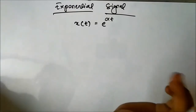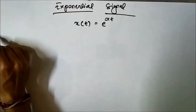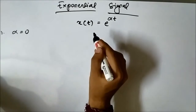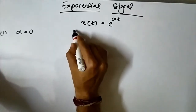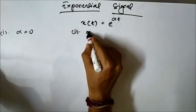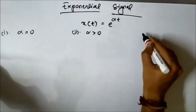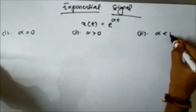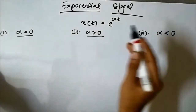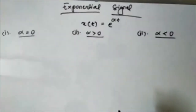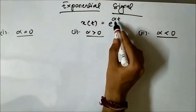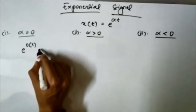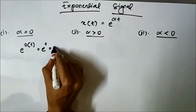We study the exponential signal under three cases: Case 1 where alpha is equal to zero, Case 2 where alpha is greater than zero, and Case 3 where alpha is lesser than zero. When we put alpha equal to zero, we get e to the power zero into t, which equals e to the power zero, which will always be one.